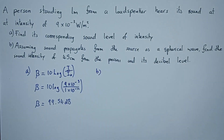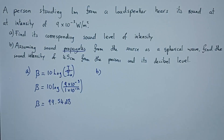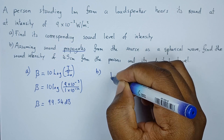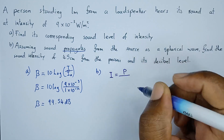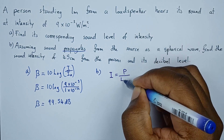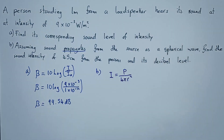For the second part, assuming the sound propagates from the source as a spherical wave — meaning it's going in all directions — find the sound intensity at 45 centimeters from the source and its decibel level. It's important to note that intensity which propagates in all directions is given by the formula P over 4 pi r squared, where r is the radius from the source.